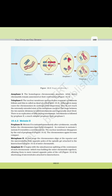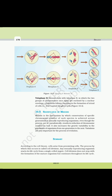Anaphase II: It begins with the simultaneous splitting of the centromere of each chromosome, which was holding the sister chromatids together, allowing them to move toward opposite poles of the cell by shortening of microtubules attached to kinetochores. Telophase II: Meiosis ends with telophase II, in which the two groups of chromosomes once again get enclosed by a nuclear envelope. Cytokinesis follows, resulting in the formation of a tetrad of cells — i.e., four haploid daughter cells.